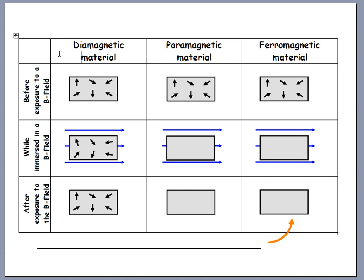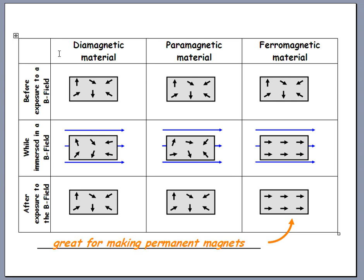For paramagnetic material, the magnetization that temporarily happens aligns with the external field, then relaxes back once you take it out. We're interested in the third column — ferromagnetic material. Overall it might not be magnetized because different chunks point in different directions. But when you expose it to a magnetic field, all sections strongly align with it. That alignment is permanent, so it retains magnetism after you remove the magnetizing field — that's why ferromagnetic material is great for making permanent magnets.